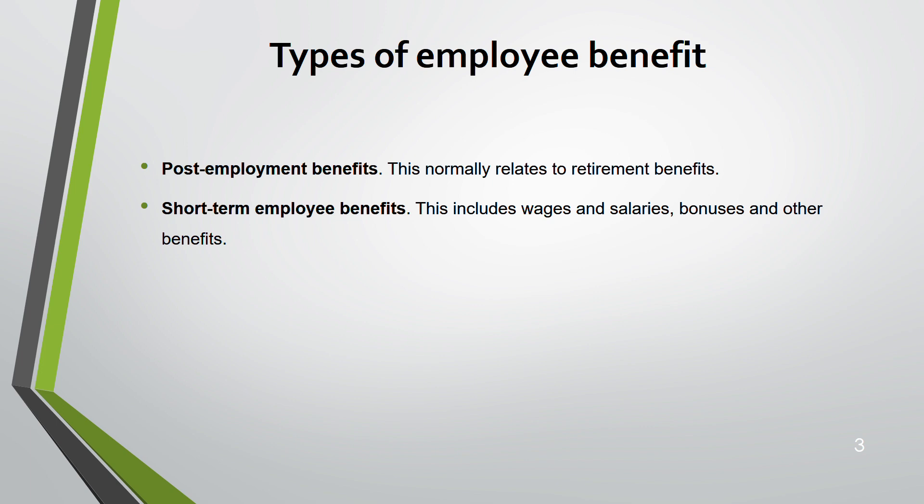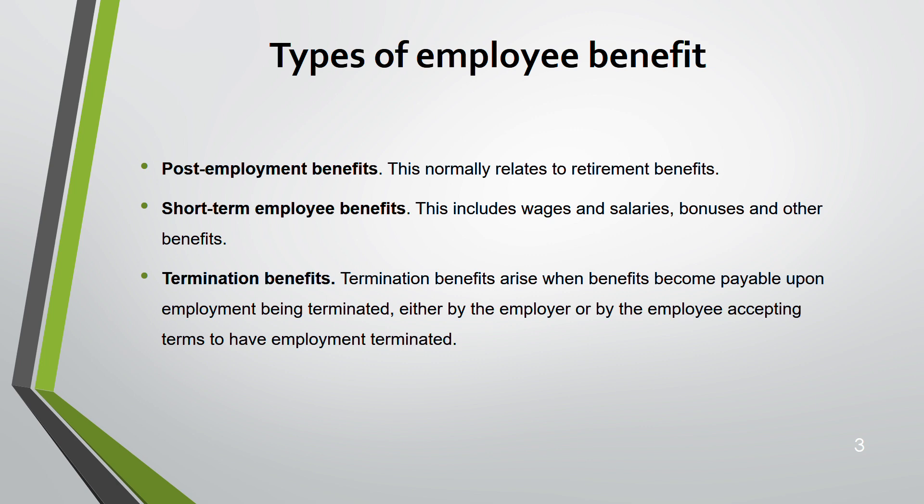The second type is short-term employee benefits, received while you are in the job — wages, salary, bonuses, and other benefits in kind. The third type is termination benefits, received after you have terminated your employment. This could happen either because your employer terminated you or because you decided to end the employment.